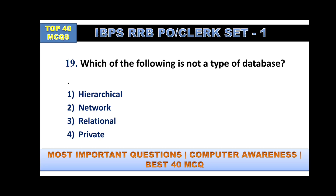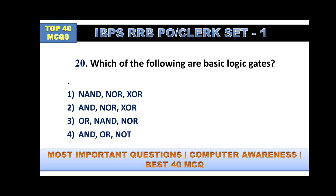Which of the following is not a type of database? Hierarchical, network, and relational databases all exist — but private database does not exist. So the answer is option number four.